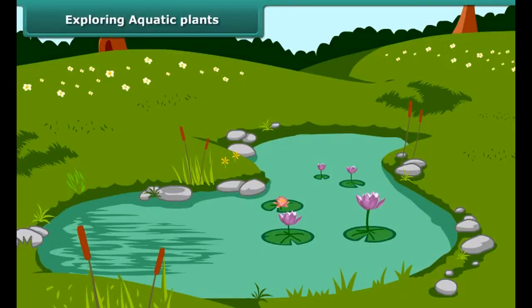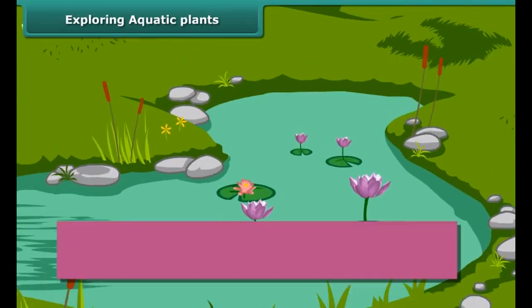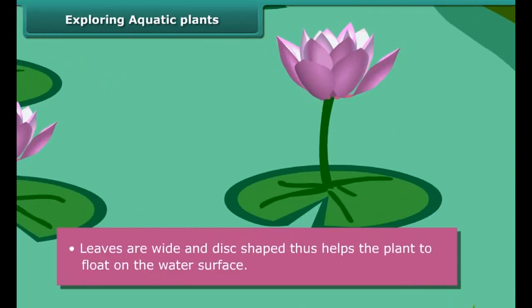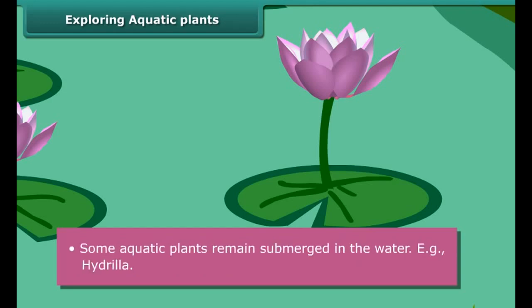Aquatic animals have special features and adaptations that help them to survive and live in aquatic habitats. Aquatic animals like fish have a streamlined body that helps them swim easily in water. Fish have a flat tail and flat fins that help them change direction in water. Fish also respire through gills.